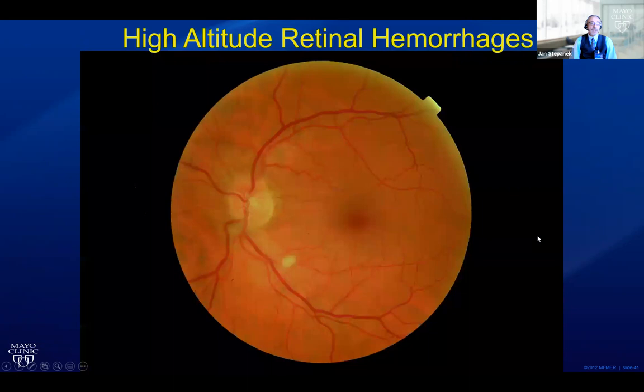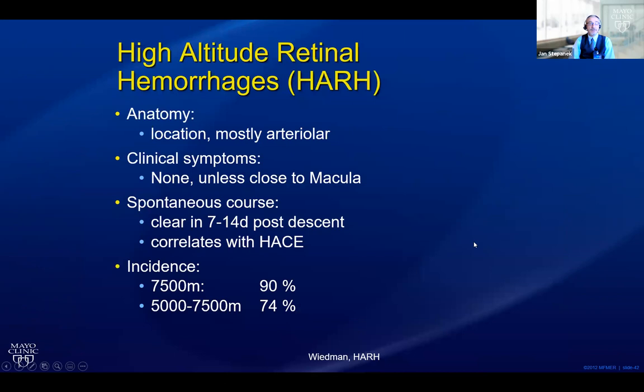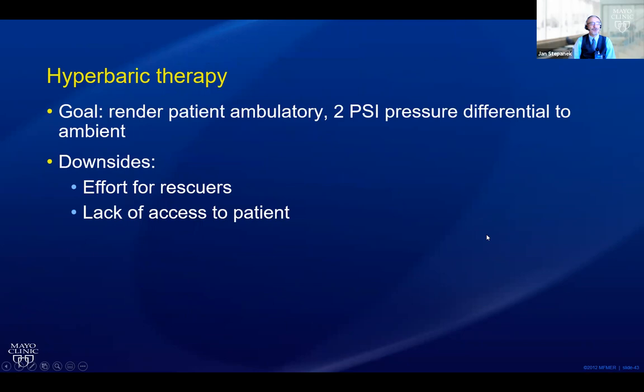High altitude retinal hemorrhages are incredibly common. If you go to significant elevation, your fundus is going to start looking like it has hemorrhages. As long as they are not close to the macula, you will not have any symptoms. They are typically arteriolar and self-clear within one to two weeks after returning to lower elevation. If you go to 7,500 meters, 90% of people will have retinal hemorrhages. The best solution is to probably not look inside people's eyes at very high altitude unless you have a really good reason — because you're going to spook yourself.